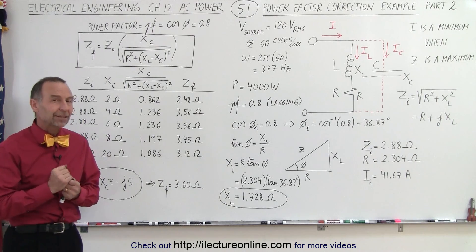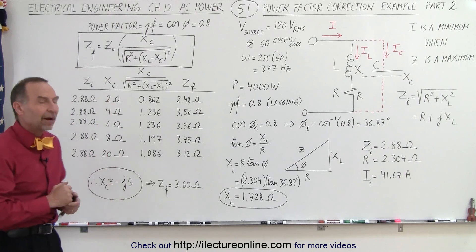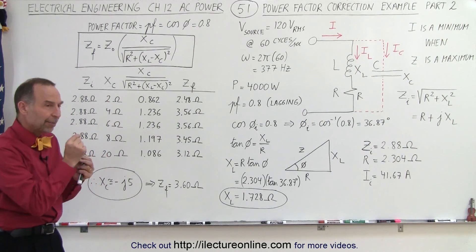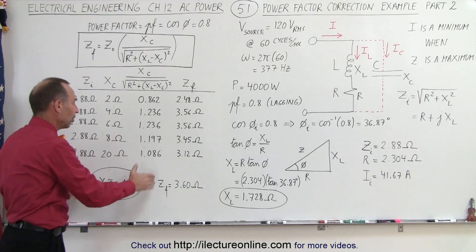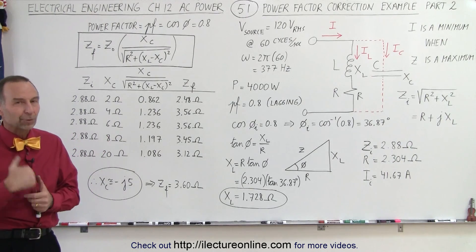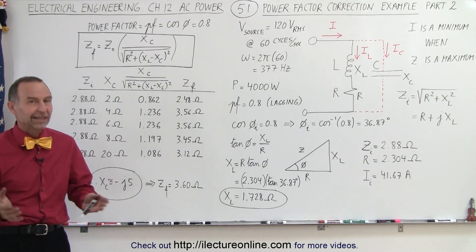So we're still going to figure out how to calculate the exact value, but at least this gives us a good feel for how this works. You can see that it's all about finding the correct capacitor that gives us the correct capacitive reactance to give us the maximum impedance and therefore the minimum current required to provide the correct amount of power to the circuit. And that's how it's done.